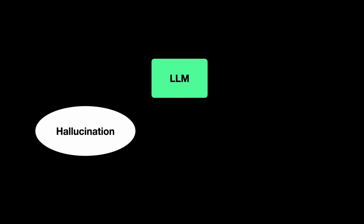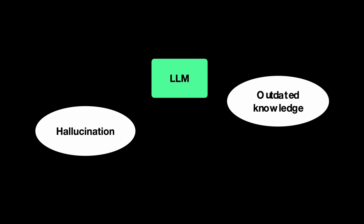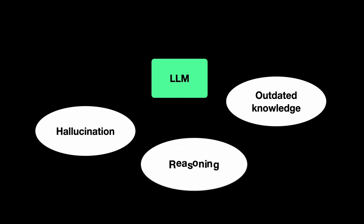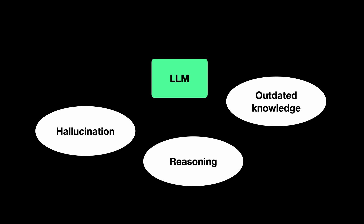LLMs have come a long way in the past year or so. Though we are continuing to see huge progress almost every week, there are three problems that still remain to be addressed. One is hallucinations, where the LLM receives queries extended beyond the model's training data and so the model comes up with imagined answers. Second is outdated knowledge, where the model is not aware of some domain-specific information or events that happen after the point in time when the model was trained. Third is reasoning capability, which almost every LLM seems to have.